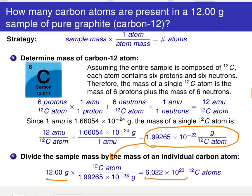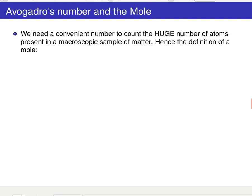And not a number that's terribly convenient to work with. So just like we introduced the dozen in order to count eggs, for example, we need to come up with some sort of convenient number to count this truly huge number of atoms present in any sort of macroscopic sample of matter. And so this is really going to motivate the definition of a mole.